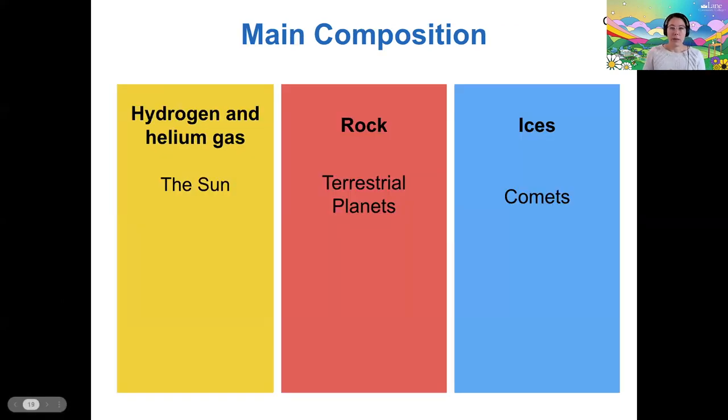Okay. So I want to talk about the composition. I kind of talked about this before, but I want to give sort of a visual for what is the composition of different objects. So the sun is mostly made of hydrogen gas, and it fuses hydrogen to helium in its core. So it's also got a good amount of helium. The terrestrial planets are mostly made of rocky materials. And like we said, comets are totally made of ice there. They've got a little bit of dust on them. You can think of them as dirty snowballs.